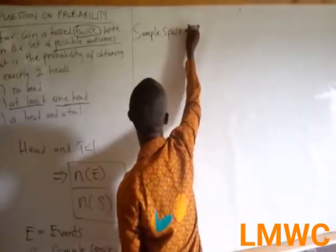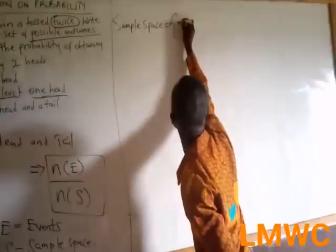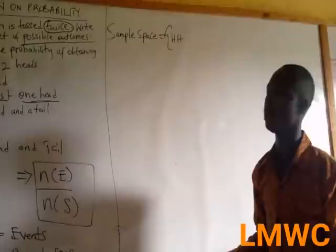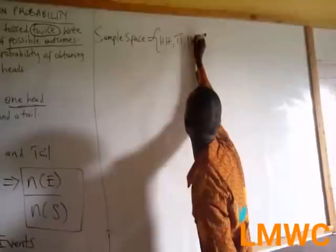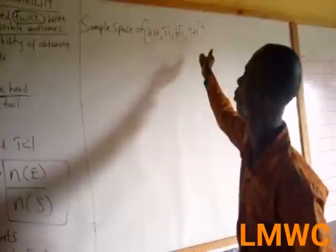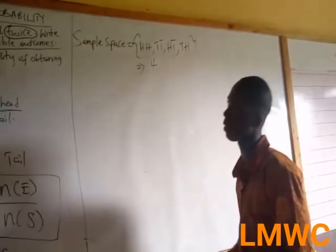So you first find your sample space. A coin is tossed twice, so the sample space is: Head-Head, Tail-Tail, Head-Tail, and also Tail-Head. So this is the sample space, and the total number of outcomes is four.